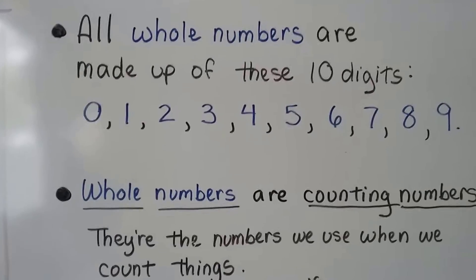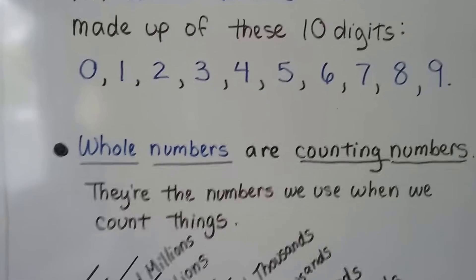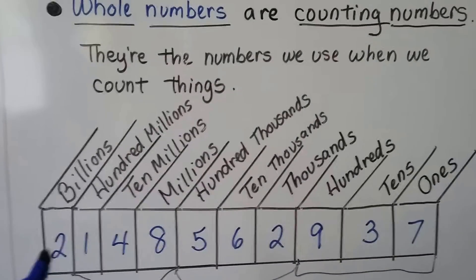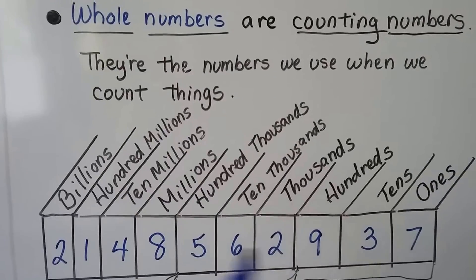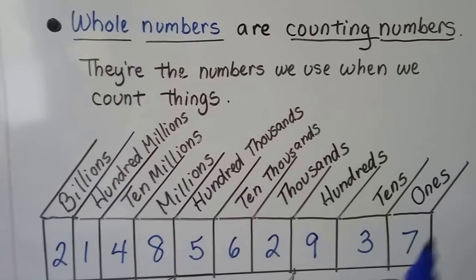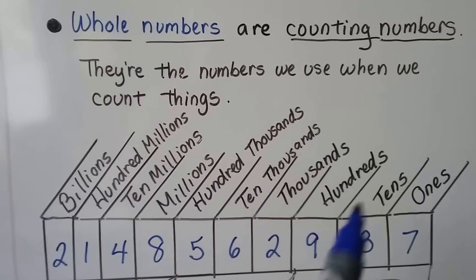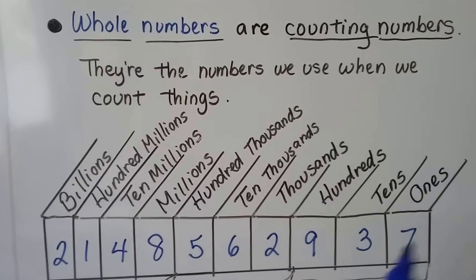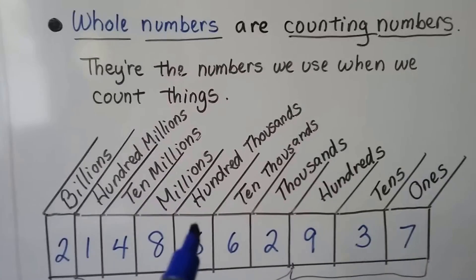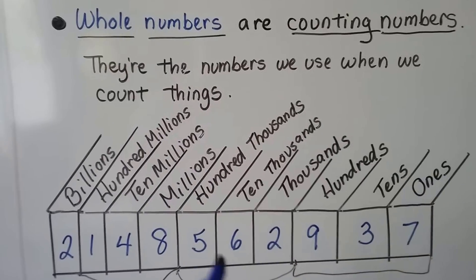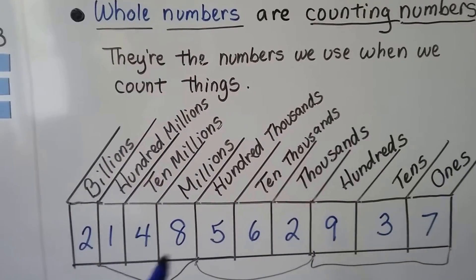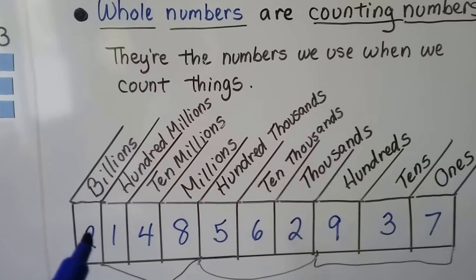Whole numbers are counting numbers — they're just the numbers we use when we count things. I made this chart with a big long number. These are the numbers in the ones place. There's 937 ones, 562 thousands, 148 millions, and 2 billions.